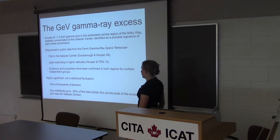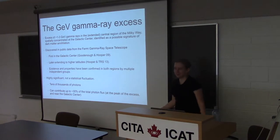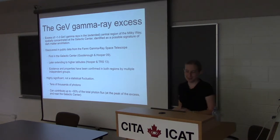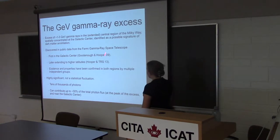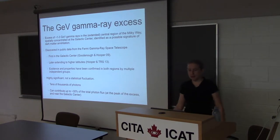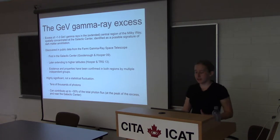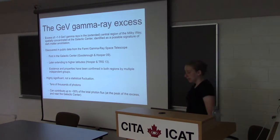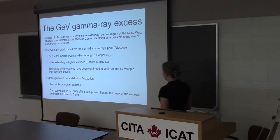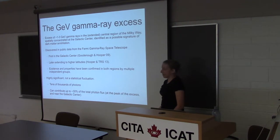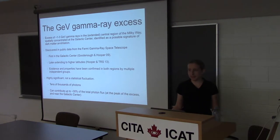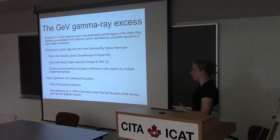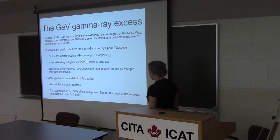The galactic center gamma-ray excess. The GC gamma-ray excess is an apparent excess of gamma rays of energy about 1 to 3 GeV in the central region of the Milky Way. It's spatially concentrated at the galactic center, but it extends out to at least 10 degrees from the galactic center, which corresponds to about 1.5 kiloparsecs.